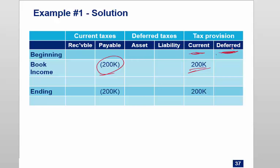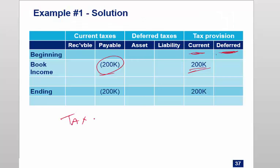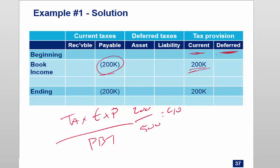What is the effective tax rate in example one? Effective tax rate equals tax expense divided by pre-tax book income. That's 200 divided by 500 — 40%. It's equal to the statutory rate because there are no permanent or temporary differences. Note that — it's important. The exam will be harder.